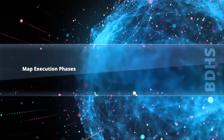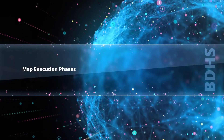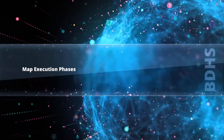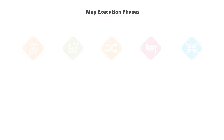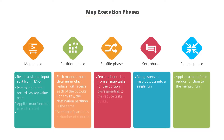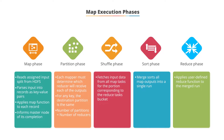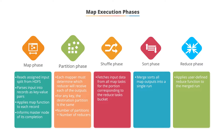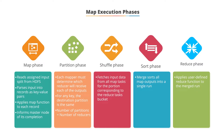Map Execution consists of five phases: the mapping phase, the partition phase, the shuffle phase, the sort phase, and the reduce phase.